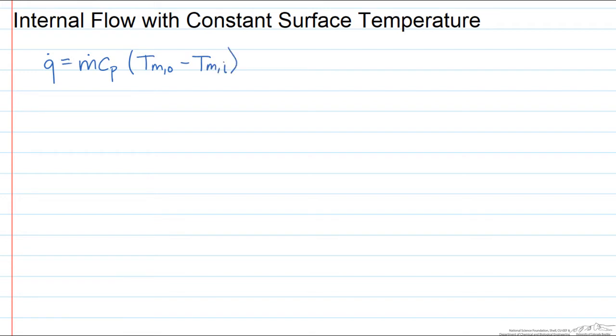And this applies irrespective of the nature of the surface or tube flow conditions. However, due to the exponential decay of the temperature difference Ts minus Tm when there's a constant surface temperature, we need to use a temperature difference.